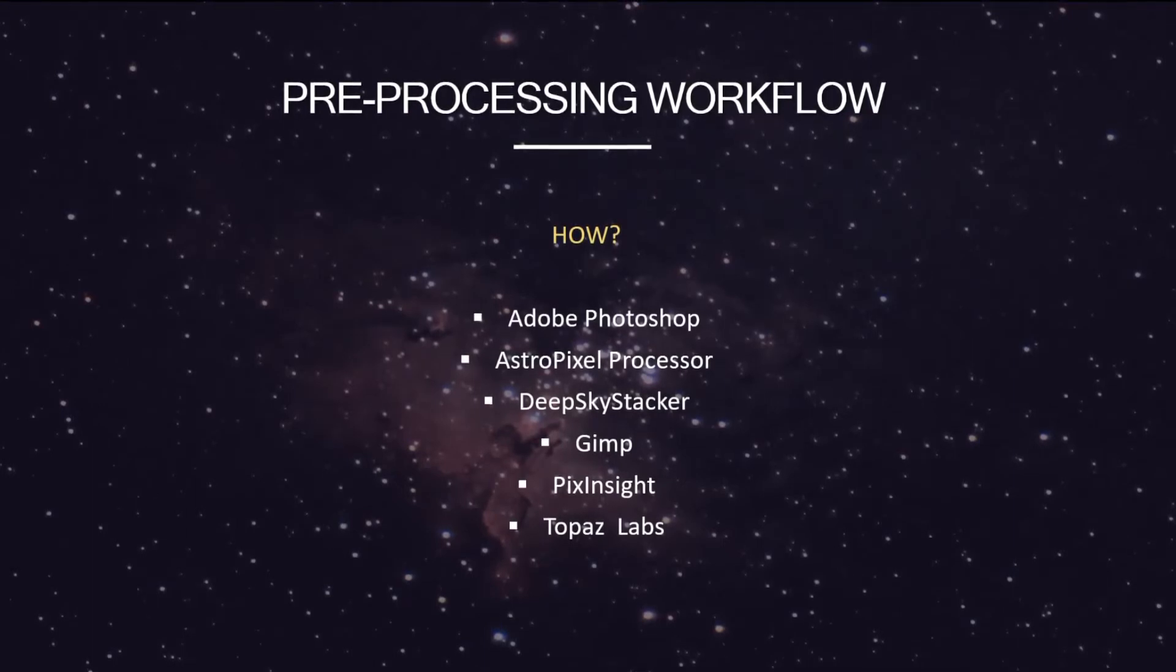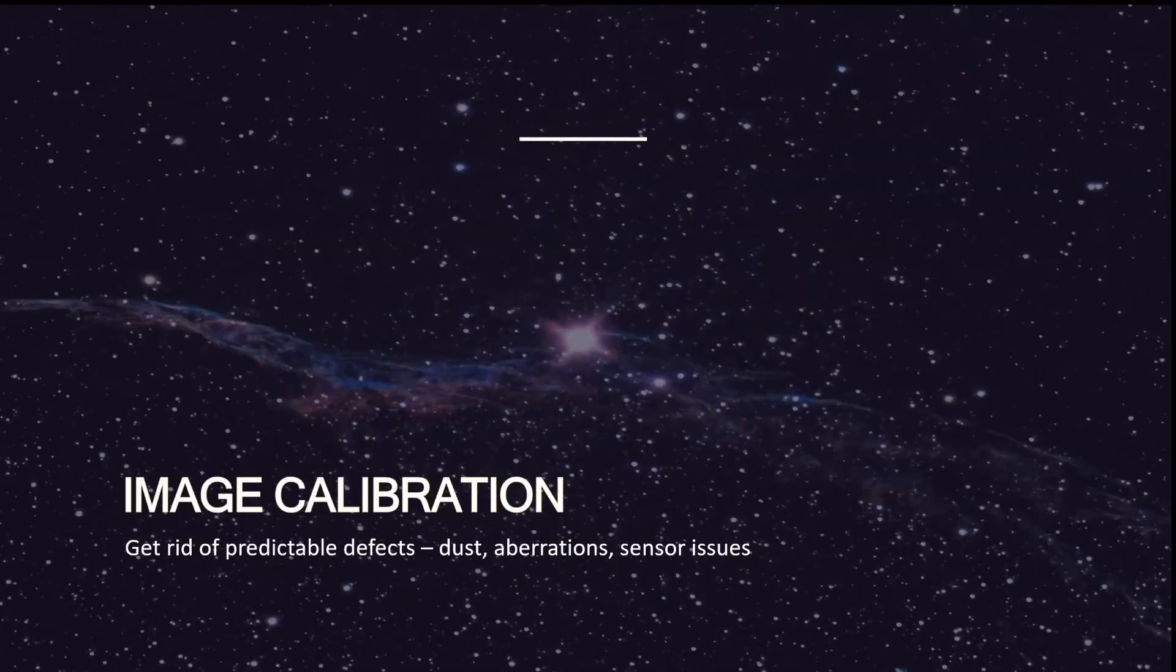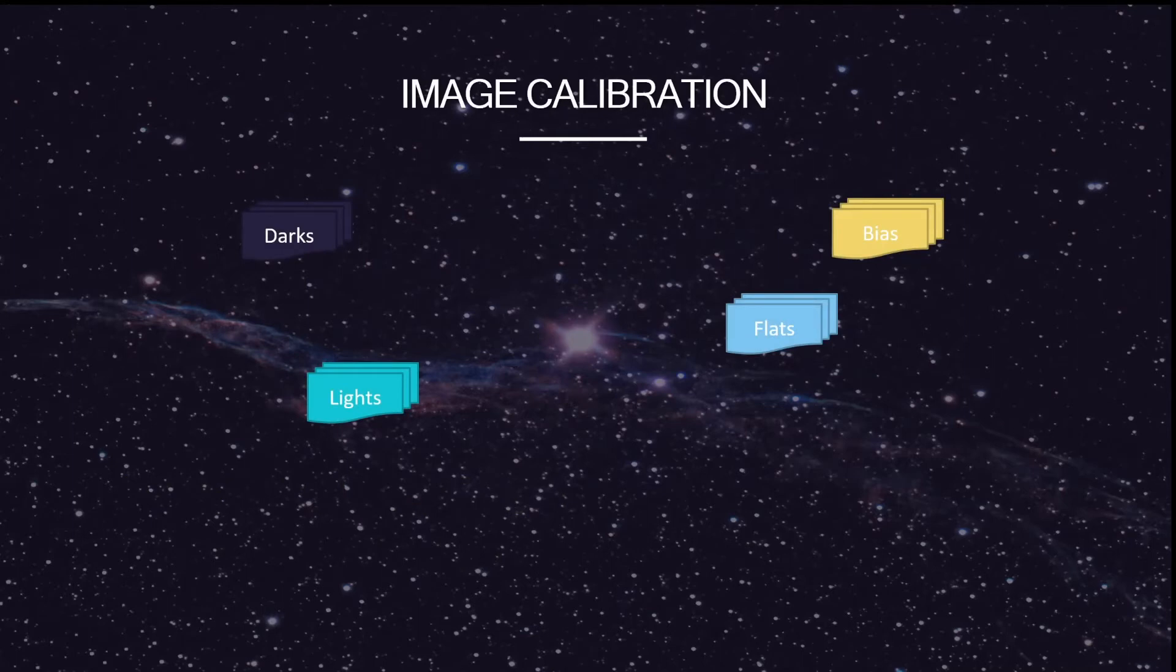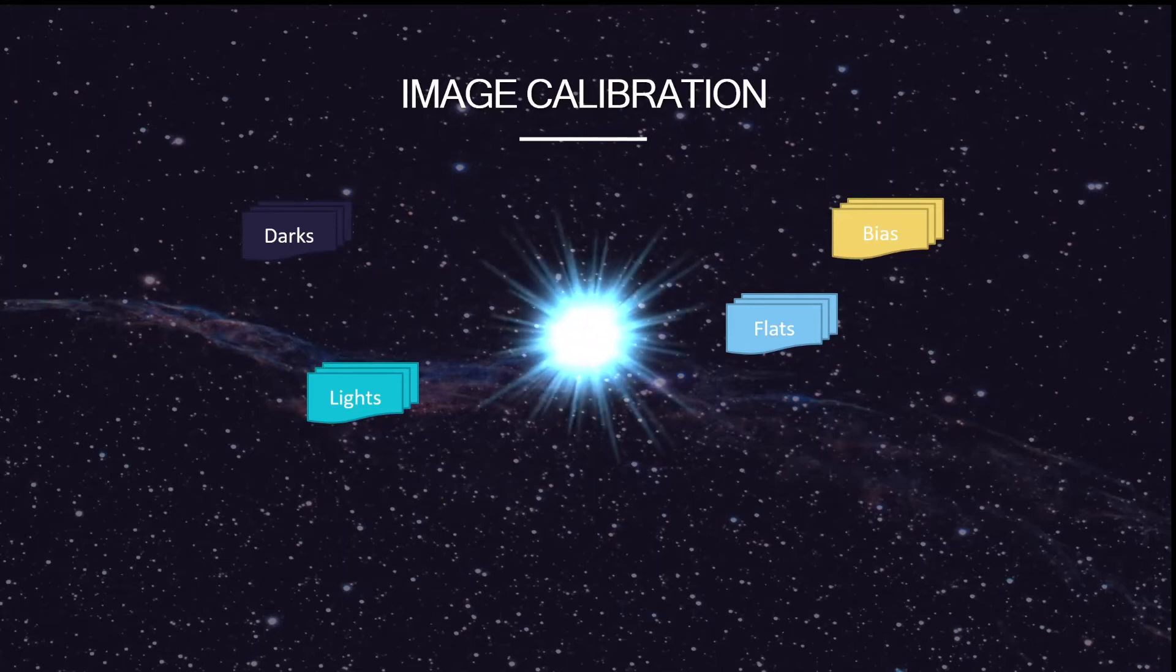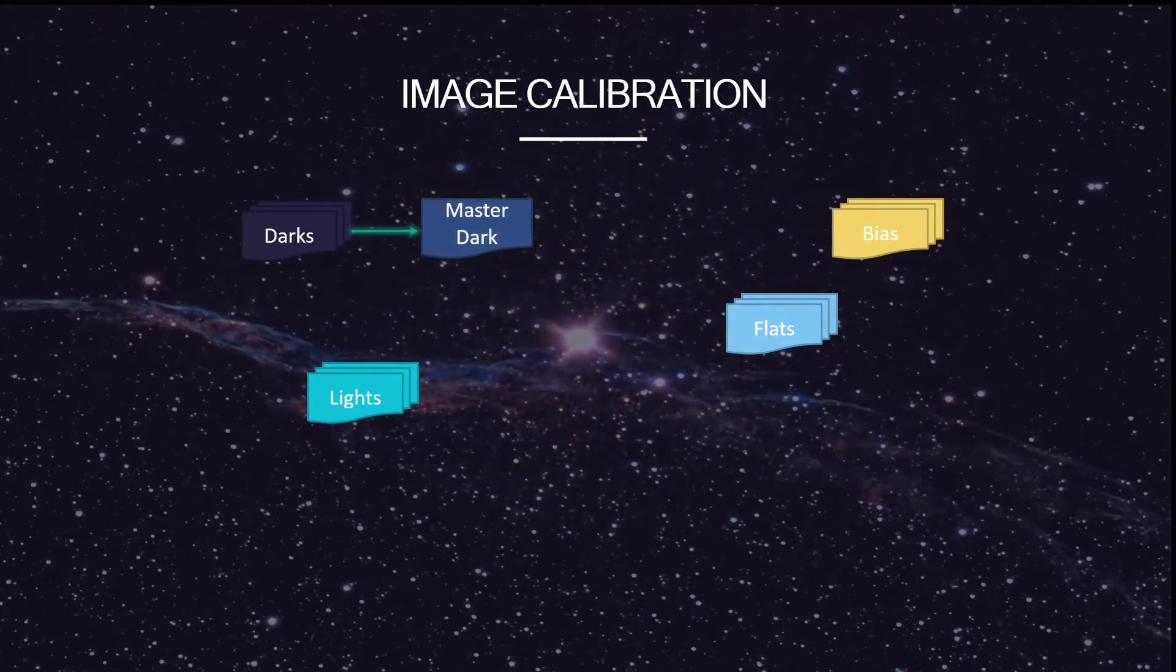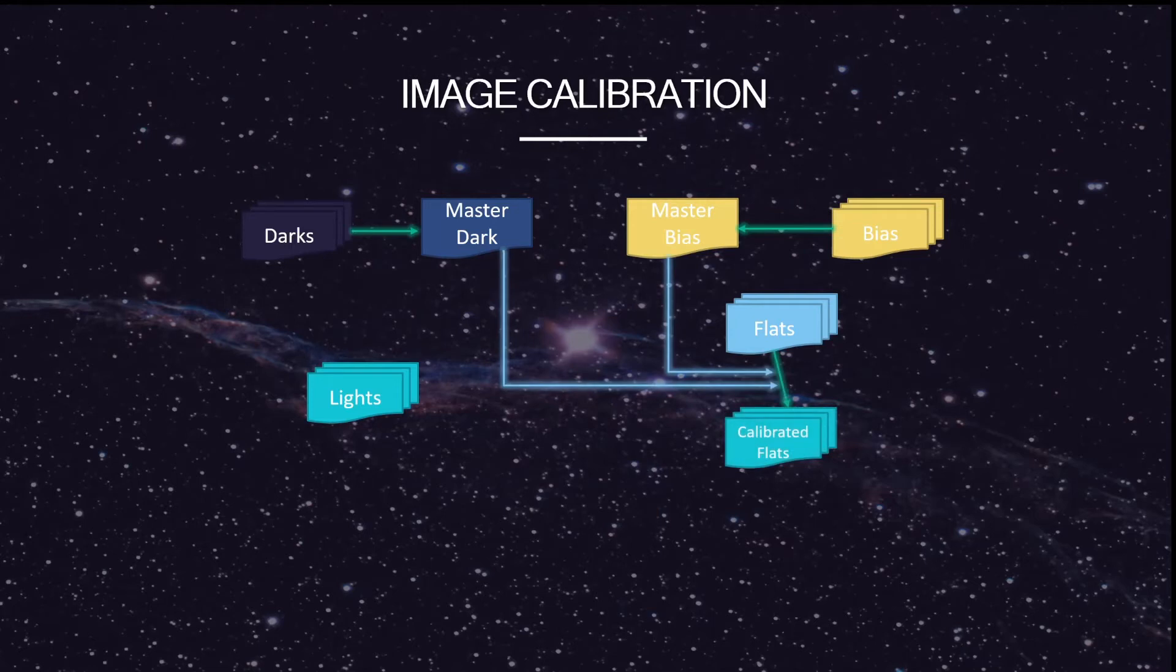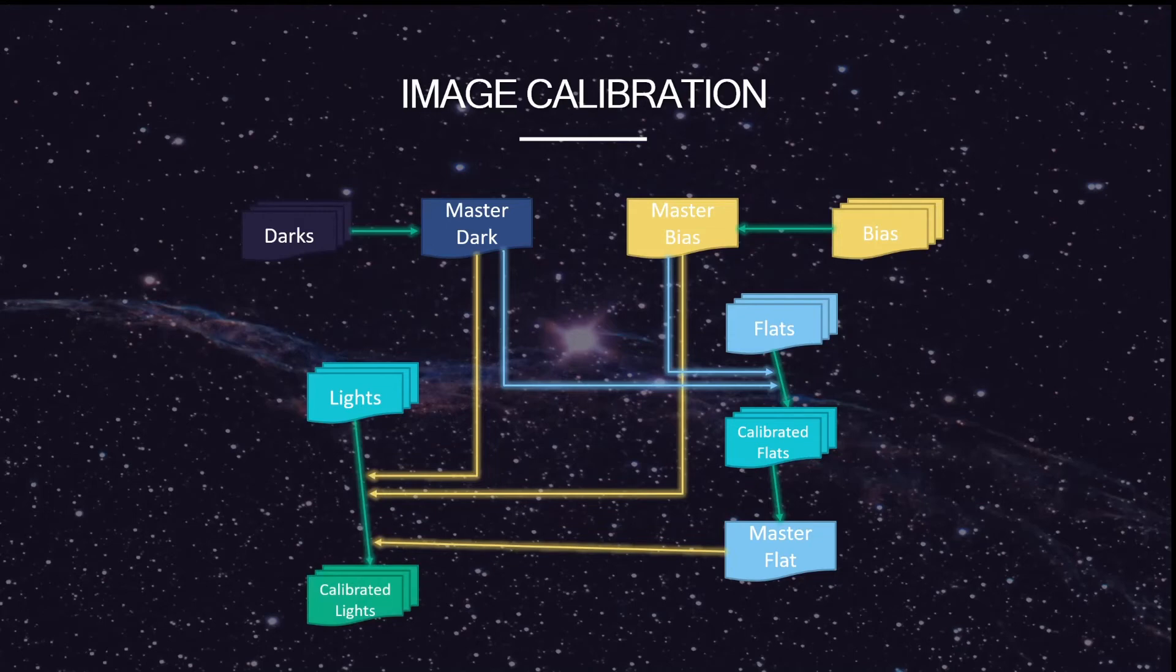Let's take a look at image calibration in a little more depth. How about a visual look at what exactly happens with image calibration? First, let's look at the overview. We've got our darks, lights, flats, and bias, and you won't always have all of these. In fact, most of the time I may process an image with just lights and darks. The darks are processed together to create a master dark, which is representative of all the noise. The bias frames are also combined to create a master bias. These can then be combined with the flats to create calibrated flats that then result in a master flat. And finally, all of this is used to create calibrated lights.